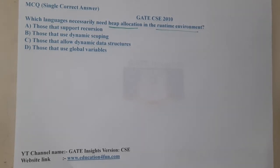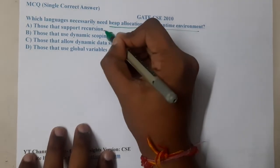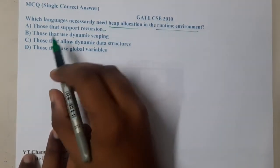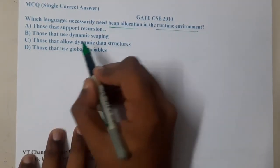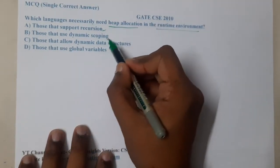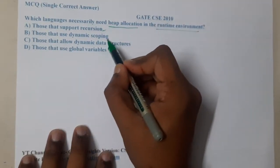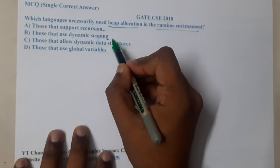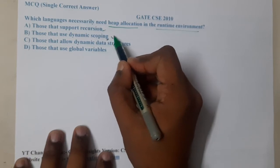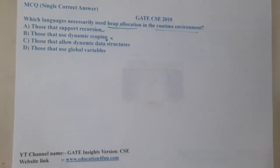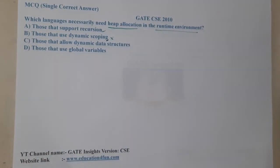Similarly, when it comes to those that use dynamic scoping, that's also not 100% true, because only for dynamic allocation or dynamic data structures do we use heaps.